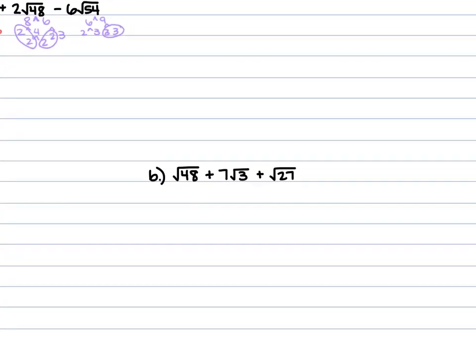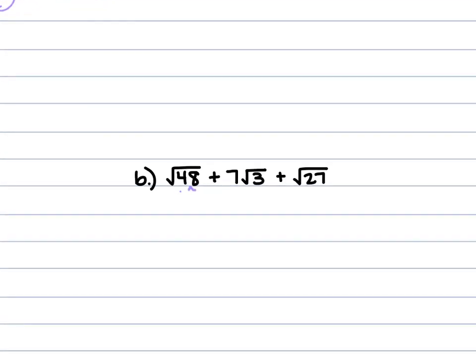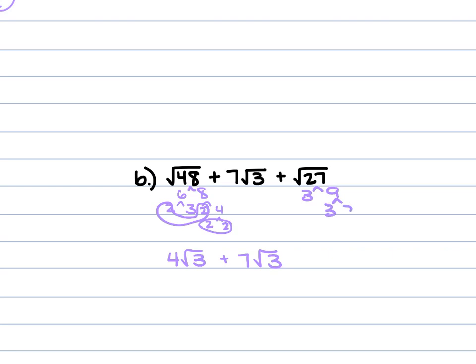For part B, we have square root of 48 plus 7 square root of 3 plus square root of 27. The 48 breaks down to 6 times 8; 8 is 2 times 4 and 4 is 2 times 2, giving 4 square root of 3. The 27 is 3 times 9, and 9 is 3 times 3, so those 3's pair up giving 3 square root of 3. Every radical has a 3 underneath, so they're all like terms: 4 plus 7 plus 3 is 14 square root of 3.